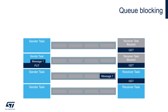At the beginning, a receiver task tries to read data from the queue. As the queue is empty, the task is sent to the blocked state. In the next phase, receiver tries to read data from the queue again. This time the queue is empty, so receiver is sent to blocked state again. Just after it, sender task sends message 1 to the queue, forcing the scheduler to move the receiver task from blocked state to ready state.